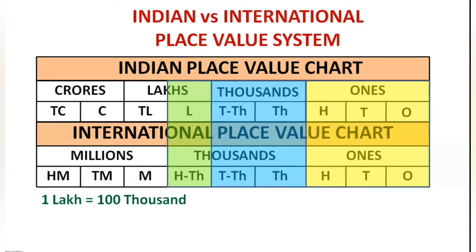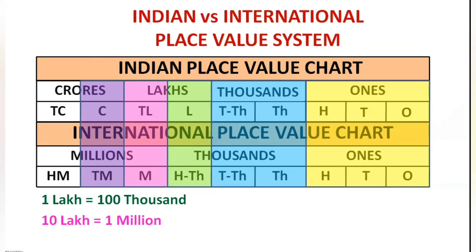Whereas lakhs in the Indian system is the same as hundred thousands in the international system, so we can say that one lakh is the same as hundred thousand. Coming to the next place, ten lakhs in the Indian system is the same as millions in the international system — that means ten lakhs is nothing but one million.